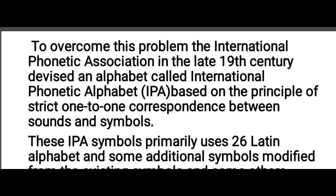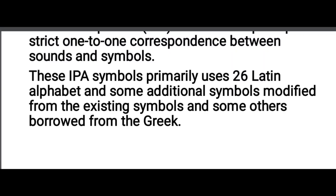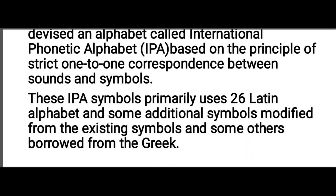To overcome this problem, the International Phonetic Association in the late 19th century devised an alphabet called the International Phonetic Alphabet, IPA, based on the principle of strict one-to-one correspondence between sounds and symbols. These IPA symbols primarily use 26 Latin alphabet characters and some additional symbols modified from existing symbols and some others borrowed from the Greek.